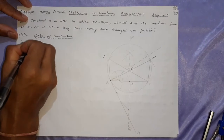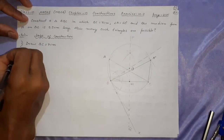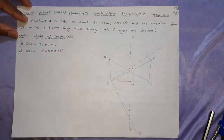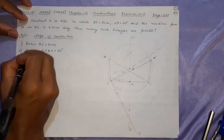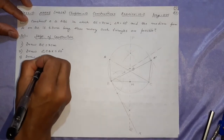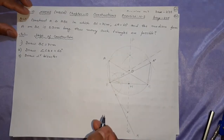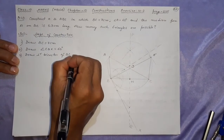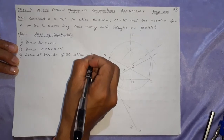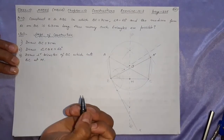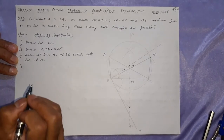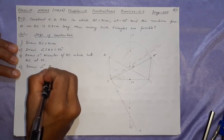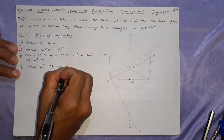Step 1: Draw BC equal to 7 centimeter. Step 2: Draw angle CBX equal to 60 degrees. Step 3: Draw perpendicular bisector of BC — you should write 'perpendicular bisector' in full form; I'm doing it in short form here, but try to make a habit of writing it in full — which cuts BC at M.